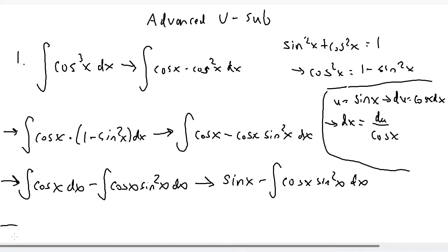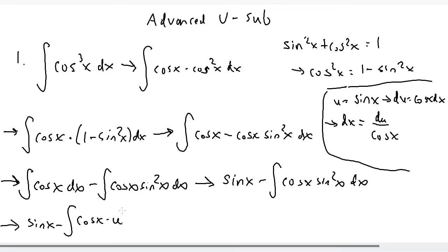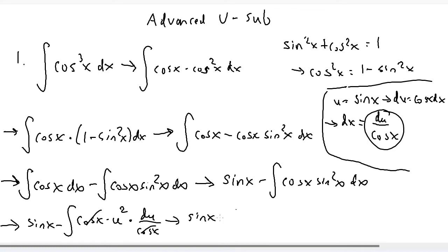So now when I plug that in, we have sine x minus the integral of cosine x times u squared — since u is sine x — multiplied by dx, which equals du over cosine x. Now we can see that the cosine x cancels, and we're left with sine of x minus the integral of u squared du.